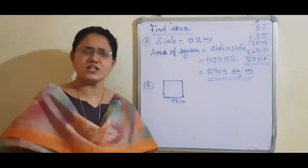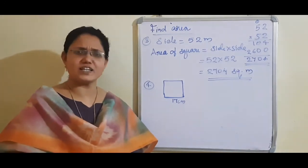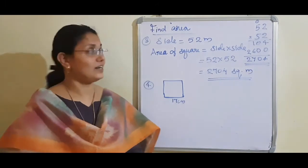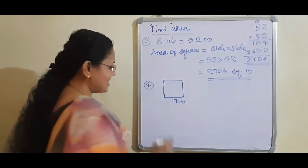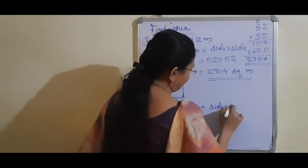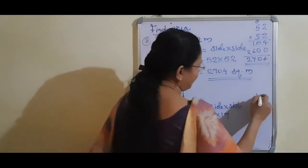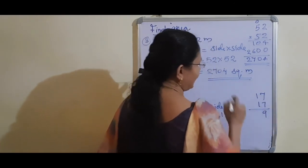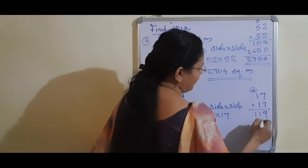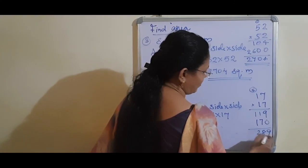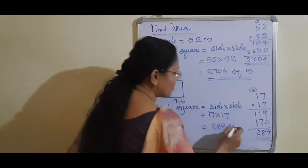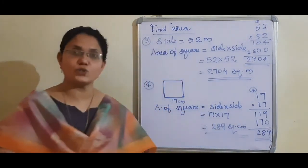The next figure shows a square with one side given as 17. If only one side is given, we identify it as a square. Area of square equals side into side, equals 17 into 17. Multiplying: 7 sevens are 49; 7 ones are 7 plus 4 equals 11; put a zero because 1 is in the tens place; 1 into 7 is 7; 1 into 1 is 1. Adding: 119 plus 170 equals 289. Centimetre is given in the question, so the answer is 289 square centimetre.